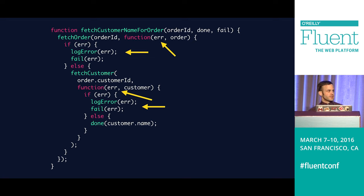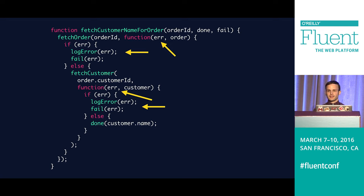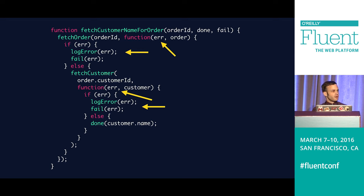Another potential issue — when we need to deal with errors with callbacks, we might see the error-first, payload-second pattern, where we check if the error exists and take appropriate action. We can't use try-catch blocks per se if we want to use those, which is a limitation of the callback approach.